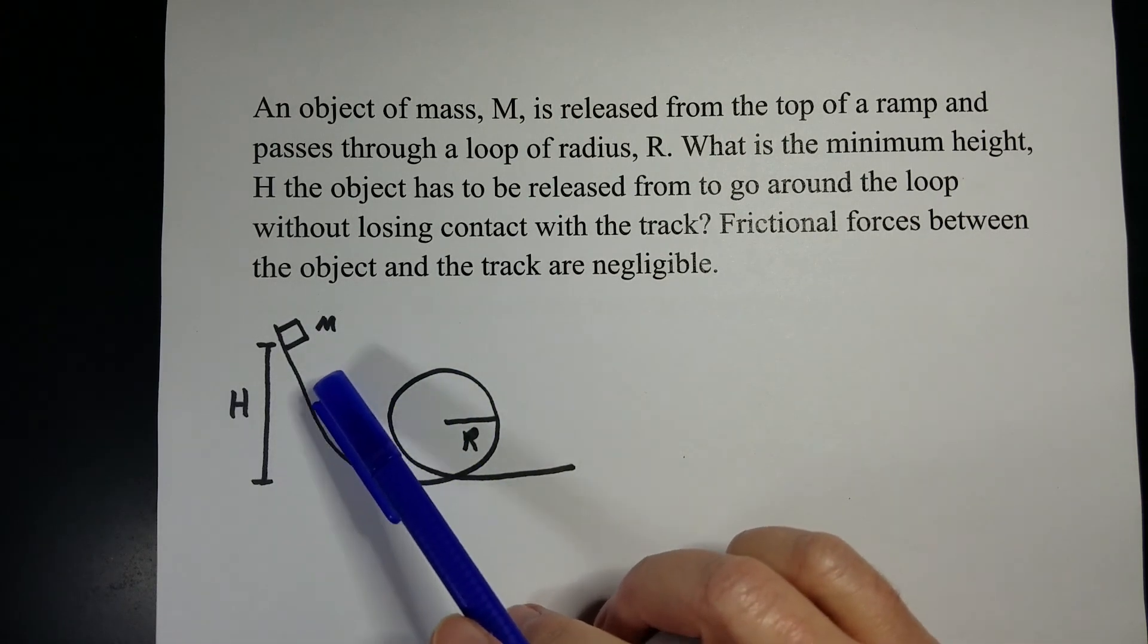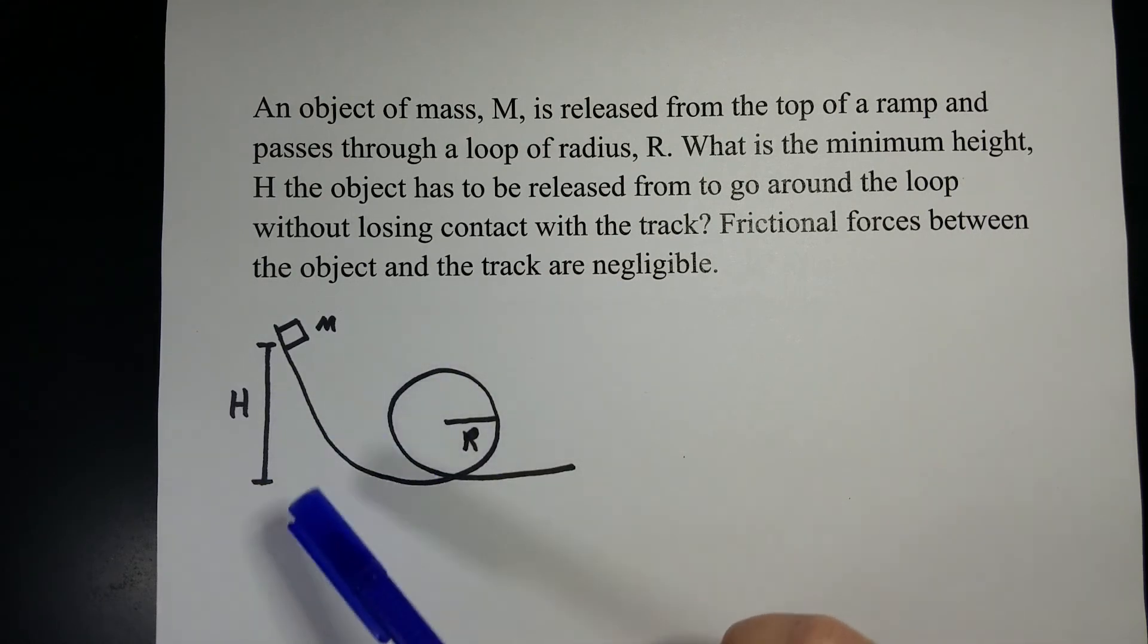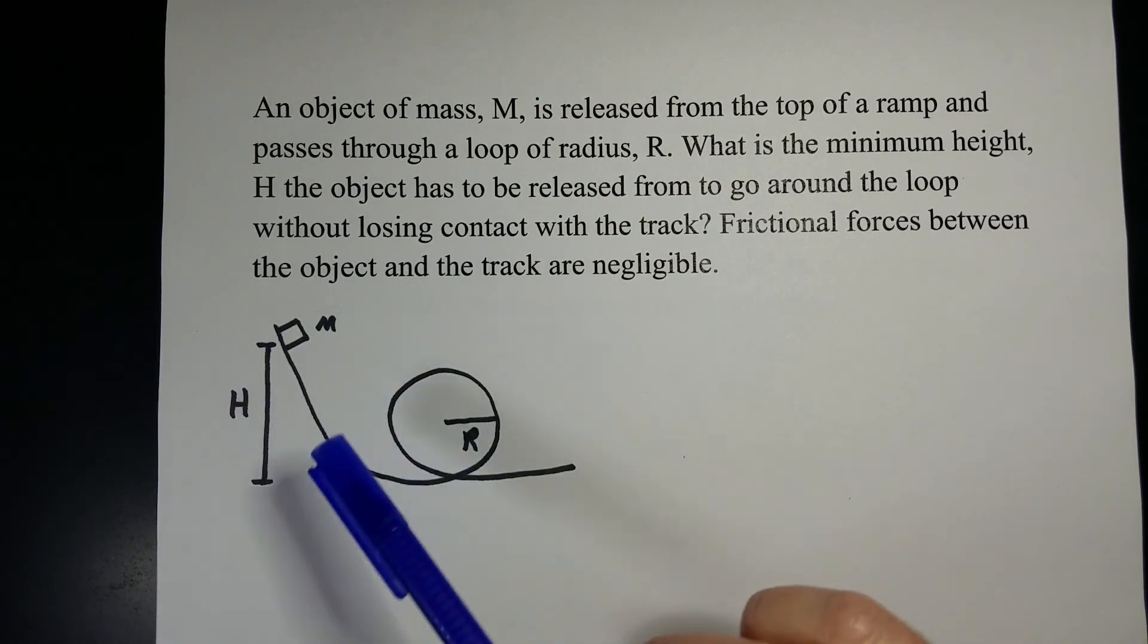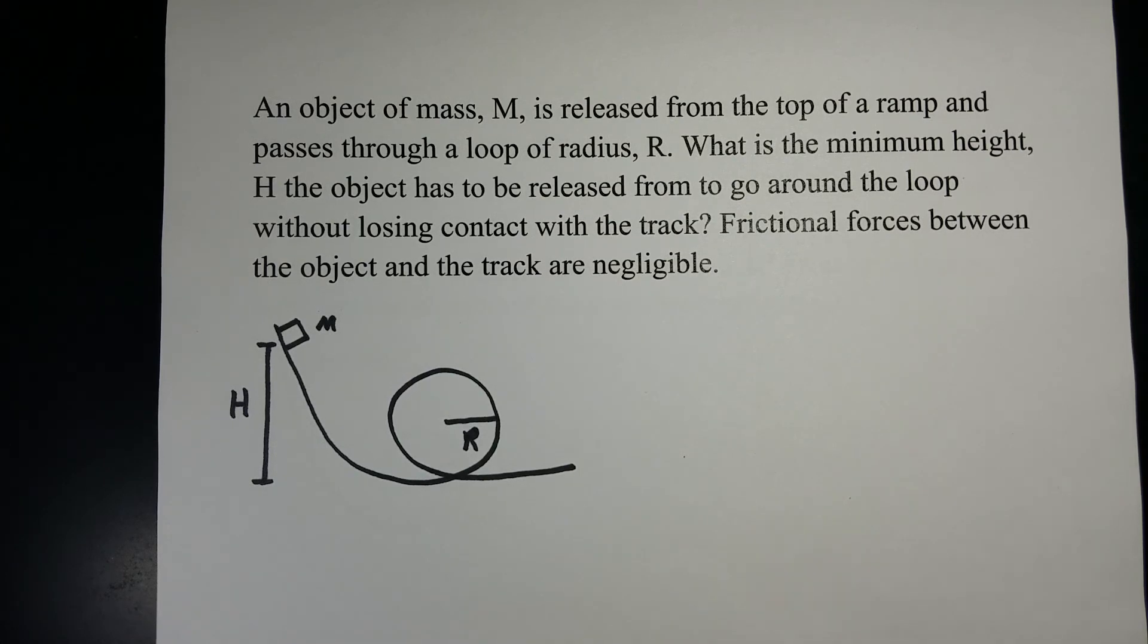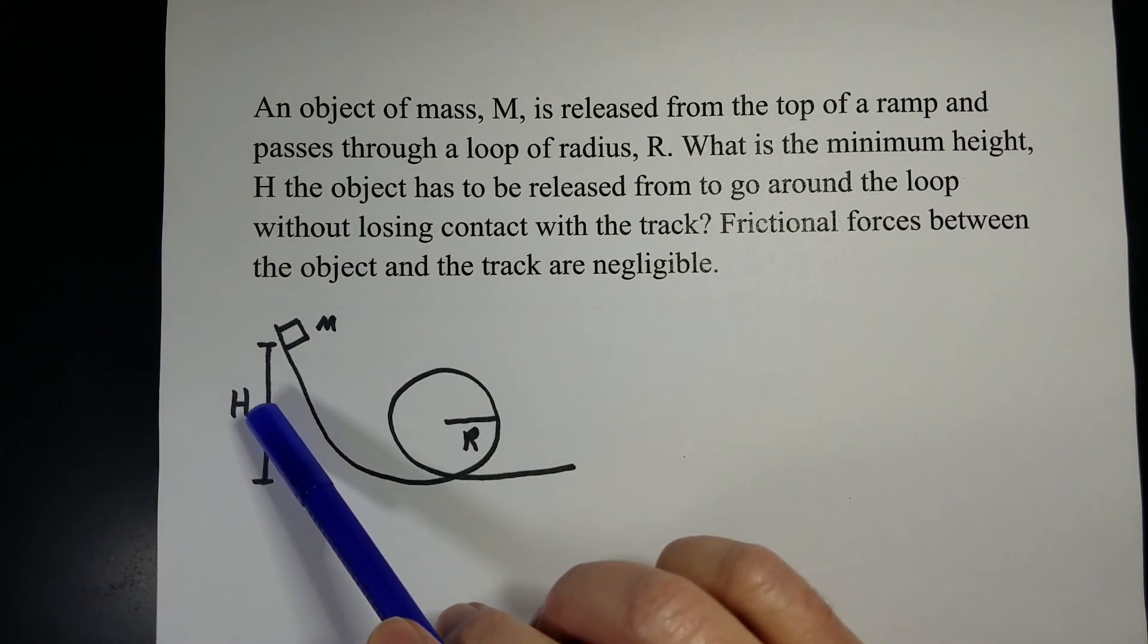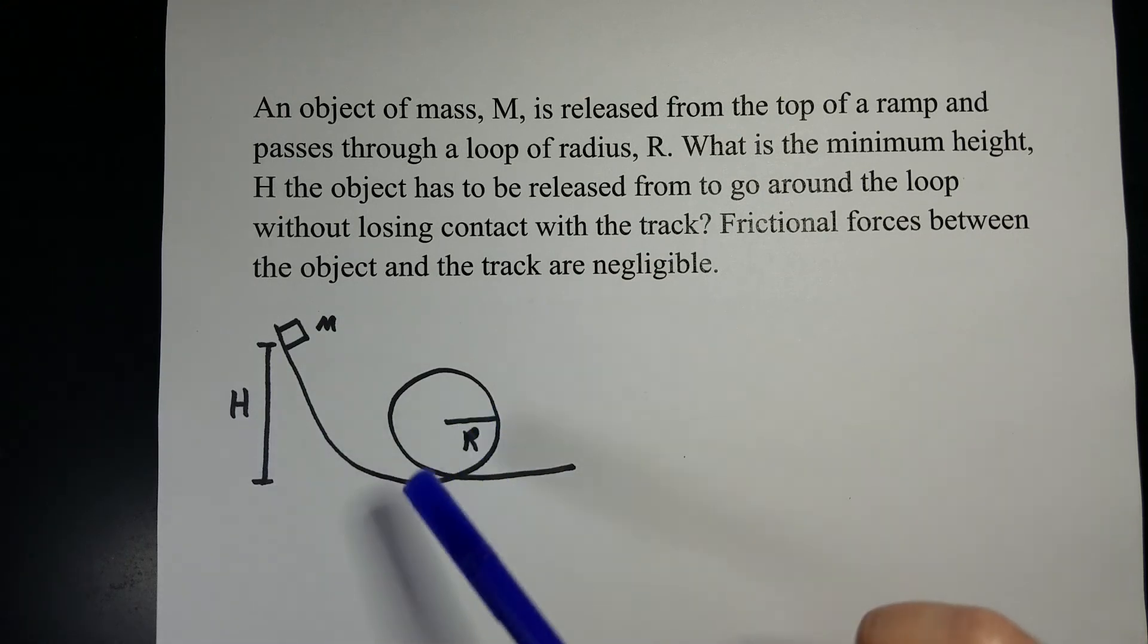The frictional forces between the block and the track are negligible as well as any other environmental frictions or causes that could cause this to slow down. But we need to figure out the height of this in terms of M and R and see what we get.